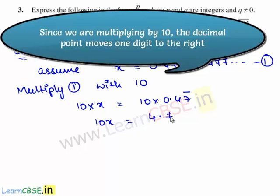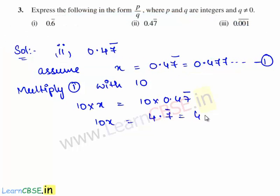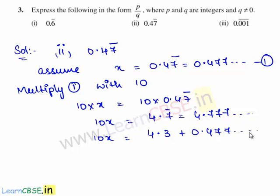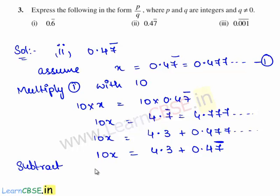That is 10 times x is equal to 10 times 0.47 bar. This gives 10x is equal to 4.7 bar, which is 4.777 and so on. Now 4.777 and so on can also be written as 4.3 plus 0.477 and so on. So this is 10x is equal to 4.3 plus 0.47 bar.